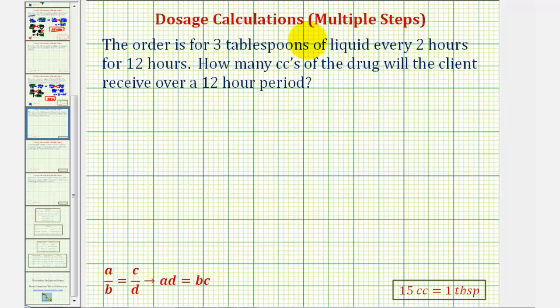Welcome to a dosage calculation that requires multiple steps. The order is for three tablespoons of liquid every two hours for twelve hours. How many cc's of the drug will the client receive over a twelve hour period?